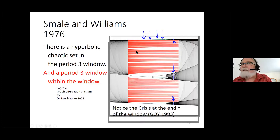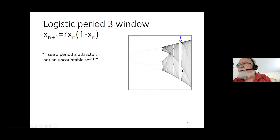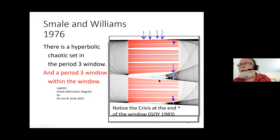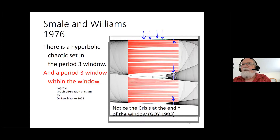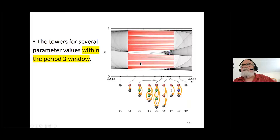If we zoom in on this piece, we're looking at a tiny little window — we call this a period-three window. Zoom in on r values between here and here, and what happens if we look at a piece within that? It has a period-three window within the period-three window, and within that there are going to be other period-three windows, or period-five, or period-seven windows. All of this stuff is coexisting for the logistic map — the simplest nonlinear map you can write down.